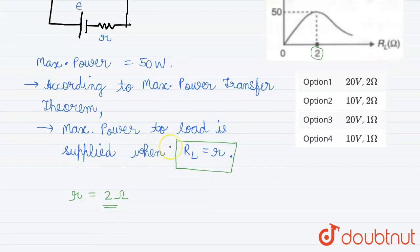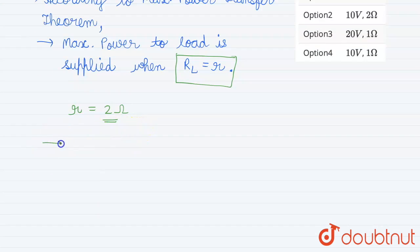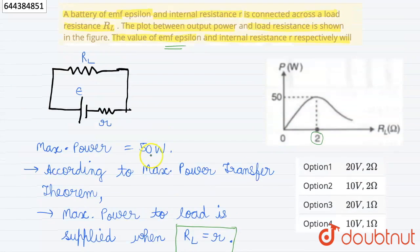Now we also have to calculate the emf epsilon. Now the max power we know, which equals 50 watts. Now this equals in a circuit I squared R. Now I will be e upon (r plus R), because they are connected in series, whole squared into R.